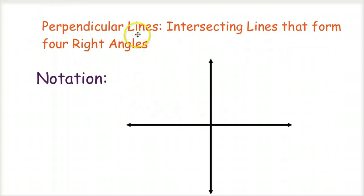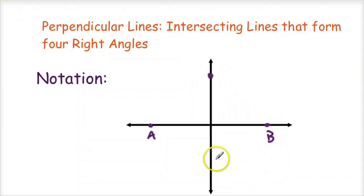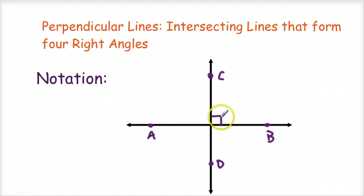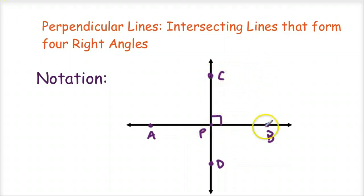The last thing we want to talk about are perpendicular lines. They are intersecting lines that form four right angles. Let's say we have line AB and CD — they intersect such that they form four right angles. The notation for a right angle is just a little box in the corner. If we call the middle point P, then angle CPB is 90 degrees, APC is 90 degrees, APD is 90 degrees, and DPB is 90 degrees. So all four are 90-degree angles.